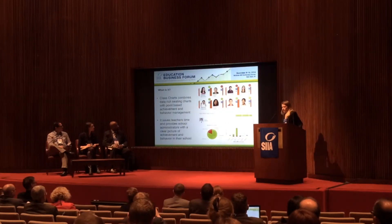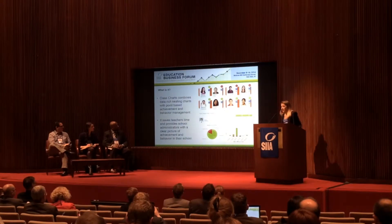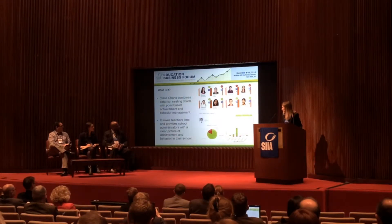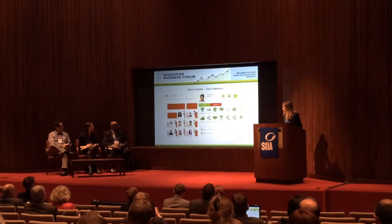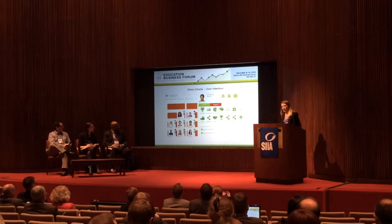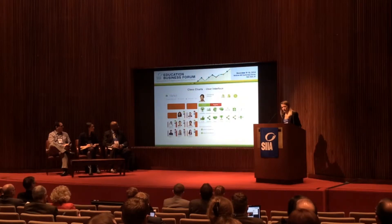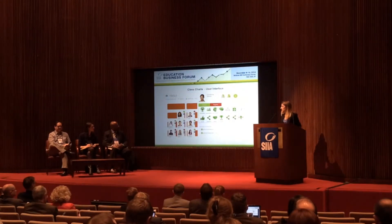By combining seating charts with a point-based behaviour management system, Class Charts saves teachers time and provides analytic behaviour reports for the whole school, year groups, classes and individual students. The Class Charts user interface is completely customisable — you can create your own classroom layout and customise the behaviours that are occurring. Teachers can backdate information, add notes and refer behavioural incidents to other teachers. You can also add key data about a student like reading age or writing levels to the seating chart to help differentiate individuals at a glance.